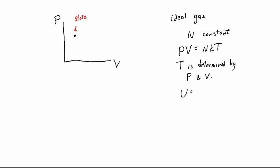The internal energy U is nf/2 times kT, and you can derive all the other thermodynamic quantities from just P and V if you're dealing with an ideal gas. We're going to focus only on ideal gases here.